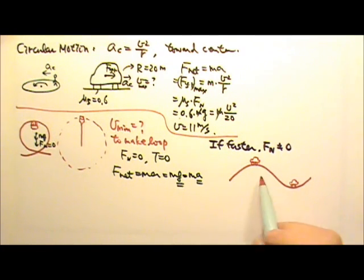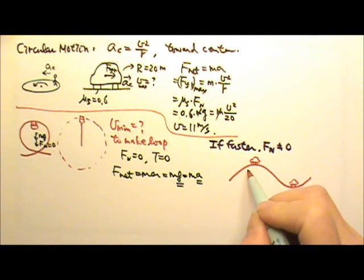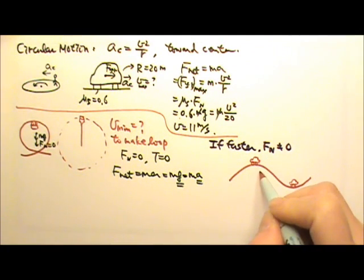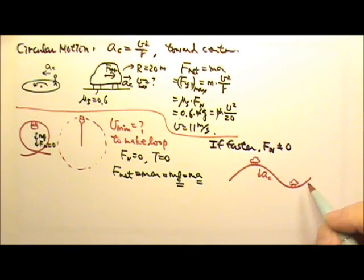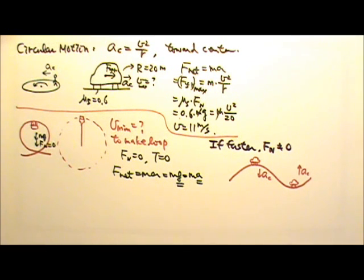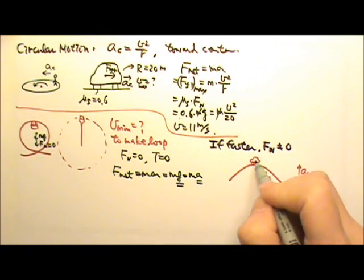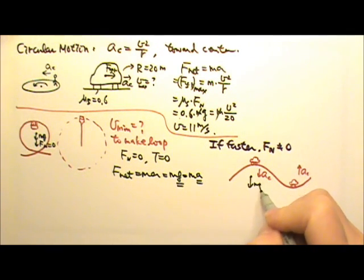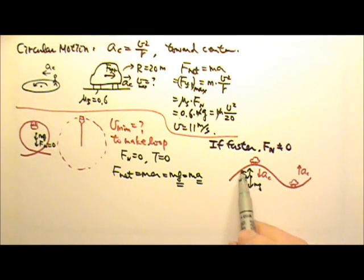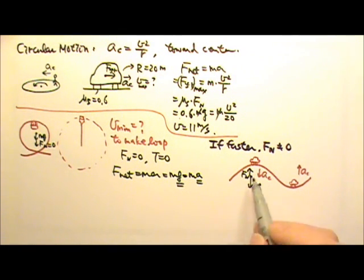We've also done problems with a car traveling on a hilly road. At the top of the hill, the car is doing circular motion with the acceleration pointing downward toward the center. At the bottom of the hill, the center is above, so the acceleration points upward. We draw the force diagram and write the force equation. If the car becomes airborne and loses contact with the road, the normal force is zero.